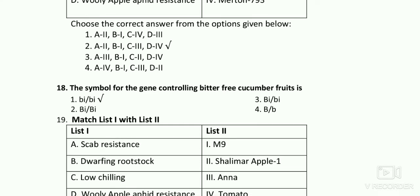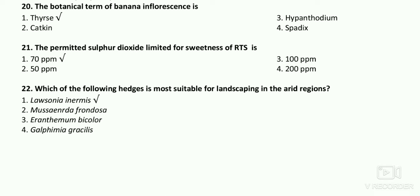The symbol for the gene controlling bitter-free cucumber fruits is 'bi' (small b, small i). The botanical term for banana inflorescence — according to the options the right answer is thyrsus. In thyrsus, the main axis continues to grow and lateral branches have determinate growth.